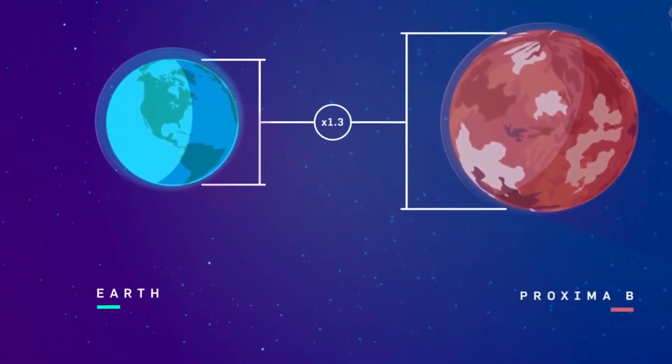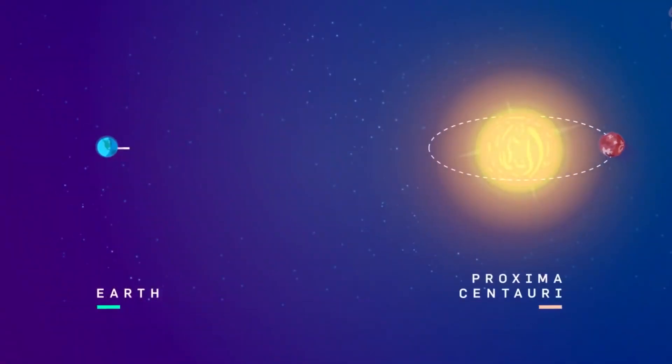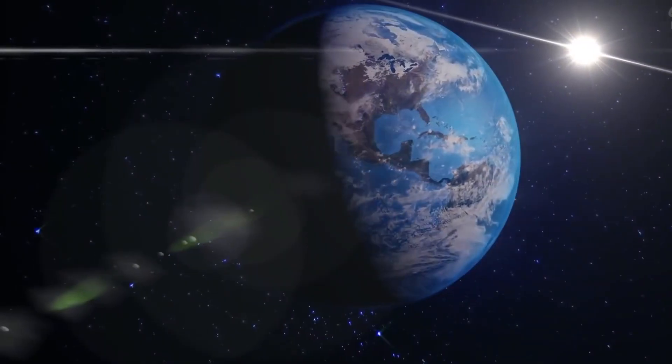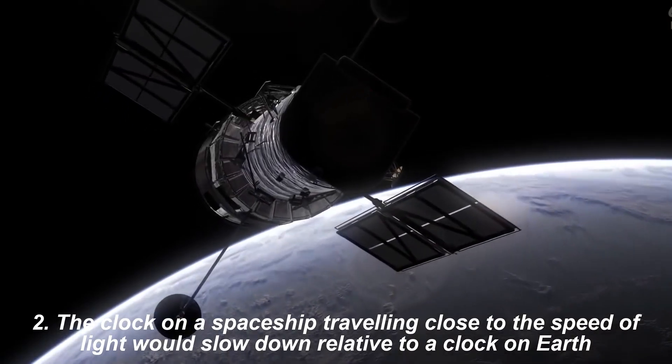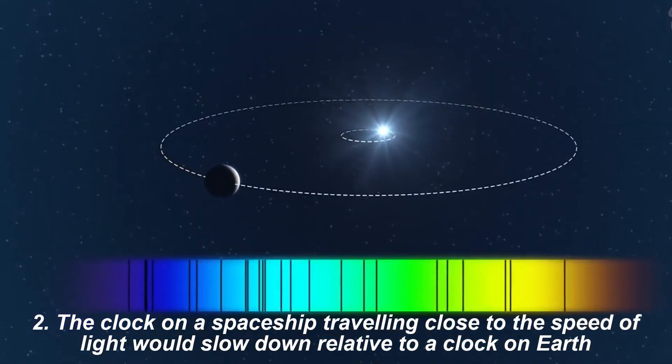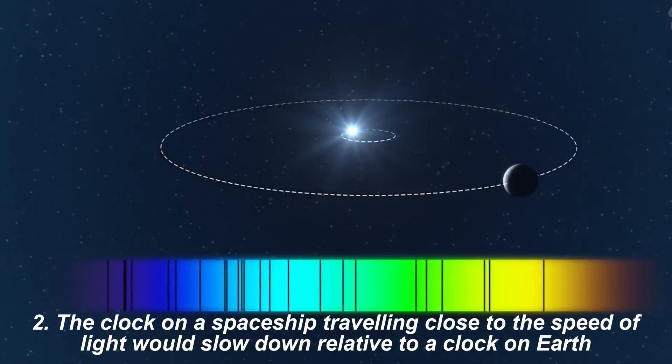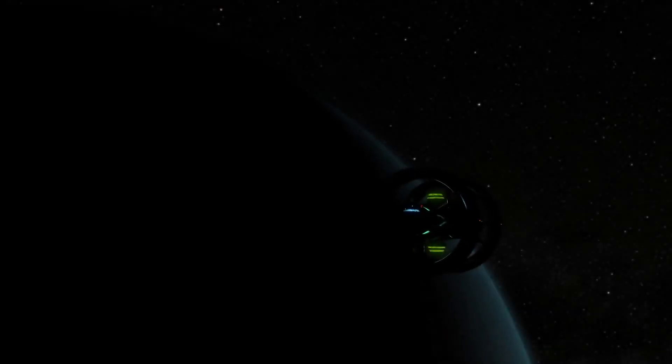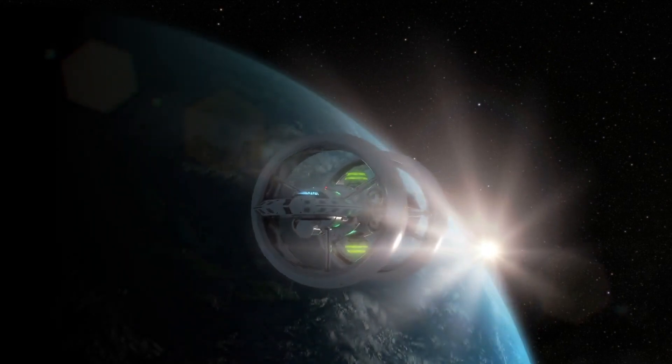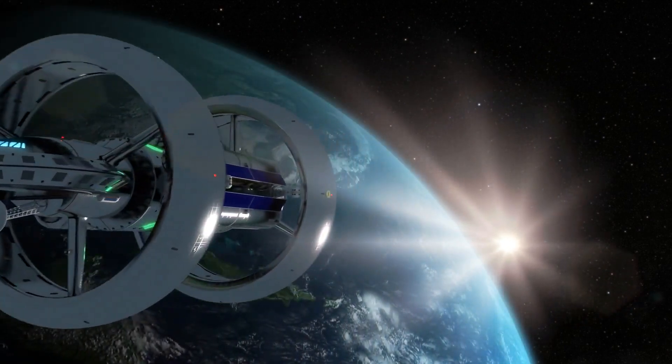Even traveling at this designated speed, it would still take us four years to arrive at Proxima Centauri, the nearest star to our Sun. Second, the clock on a spaceship traveling close to the speed of light would slow down relative to a clock on Earth. This is known as time dilation.